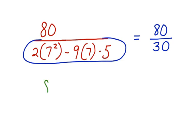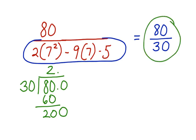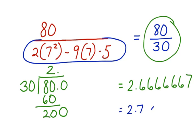Now, if you weren't using your calculator, you would have to do this math the long way — dividing 30 into 80, which goes on and on. However, by using the calculator, we can do the simple division. When we divide 80 by 30, we get 2.6666667. We can round that to 2.7, or we can simply leave it as 2.66.